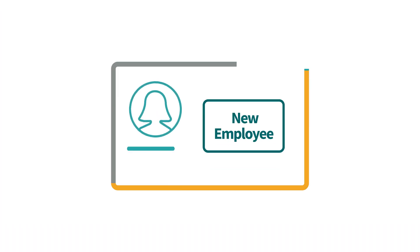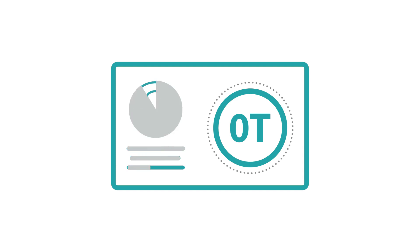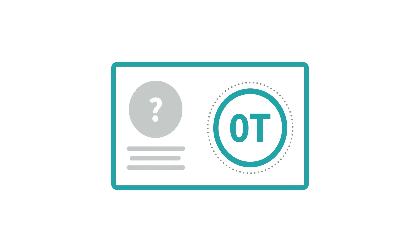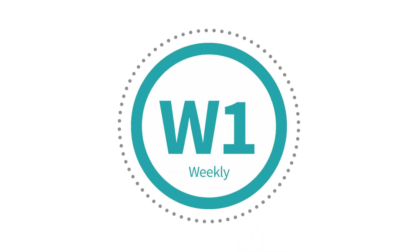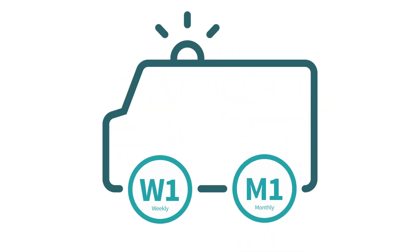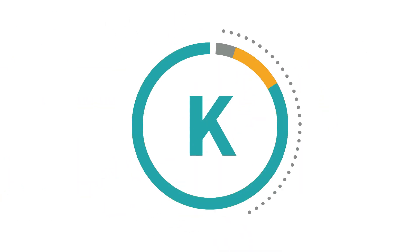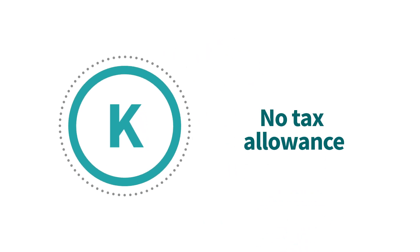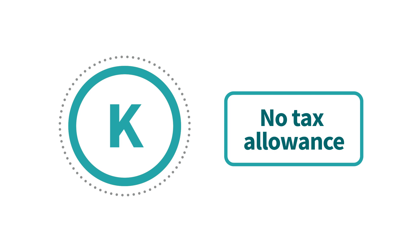If you've started a new job, the OT code can mean that your employer doesn't have the right details to be able to give you a tax code. W1 and M1 are both emergency tax codes. With the K code, you'll have no tax allowance — this code recovers any unpaid taxes beyond your personal allowance.